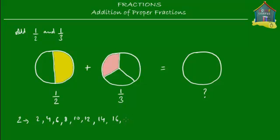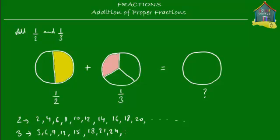Continuing: 16, 18, 20 and so on. The multiplication table for three is: 3, 6, 9, 12, 15, 18, 21, 24, 27, 30 and so on.